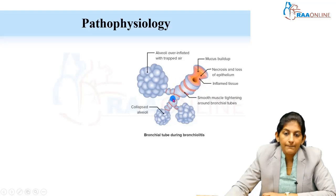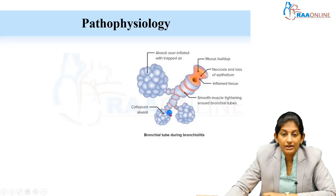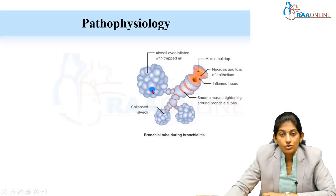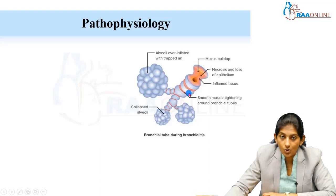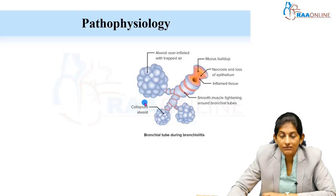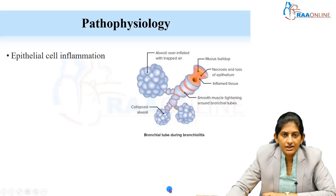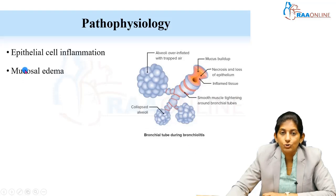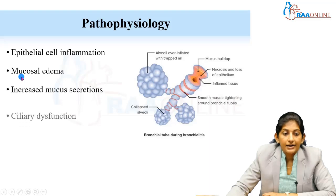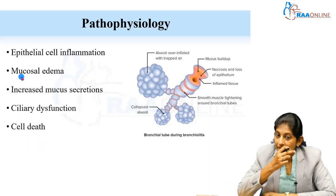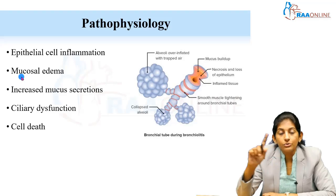With complete obstruction, the alveoli start collapsing. With partial obstruction, the alveoli become trapped with air and get overinflated — air goes in but because of the partial obstruction, it doesn't come out. This is why on chest X-ray we see a picture of hyperinflation in children with bronchiolitis. There is cellular inflammation, mucosal edema, cellular death, and ciliary dysfunction.